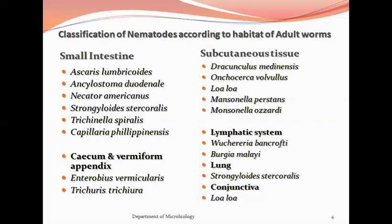Nematodes can be classified based on the habitat of the adult worms. Those inhabiting the small intestine include Ascaris lumbricoides, Ankylostoma duodenale, Necator americanus, Strongyloides stercoralis, Trichinella spiralis, and Capillaria philippinensis. Those in the cecum and vermiform appendix include Enterobius vermicularis and Trichuris trichura. Those in subcutaneous tissues include Dracunculus medinensis, Onchocerca volvulus, Loa loa, and Mansonella species. Those in the lymphatic system include Wuchereria bancrofti and Brugia malayi.